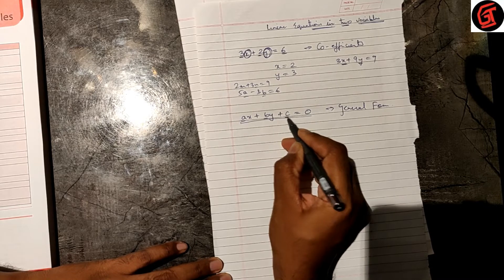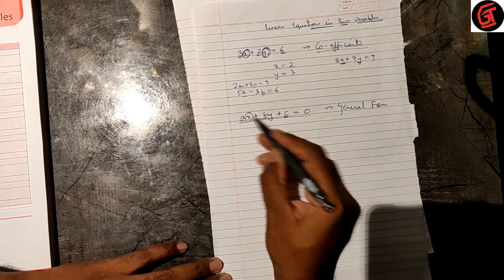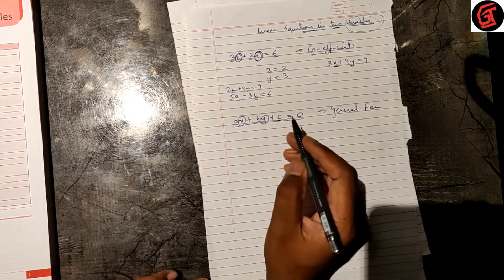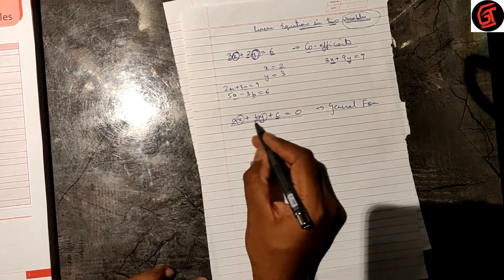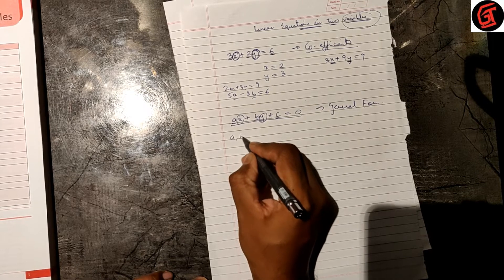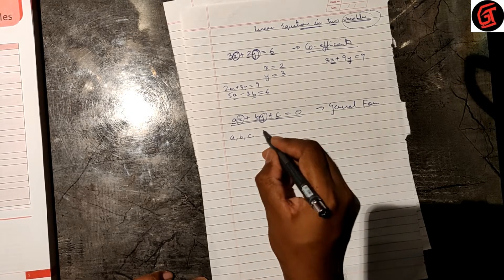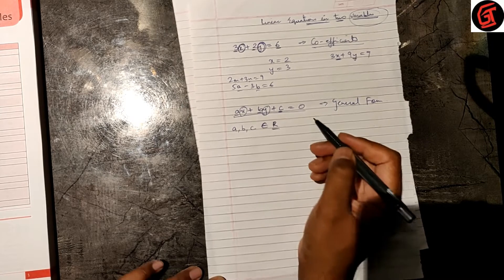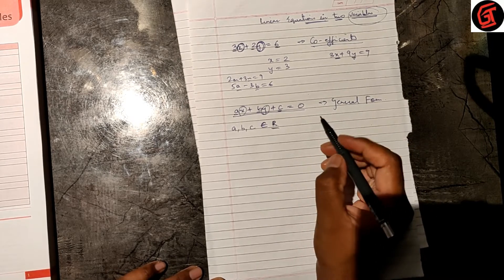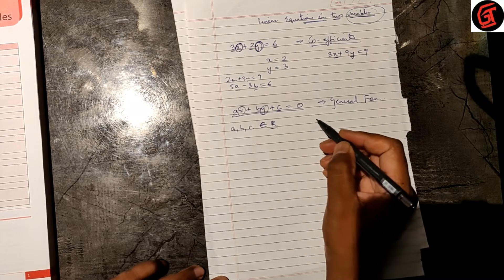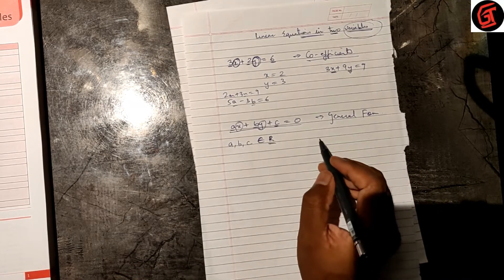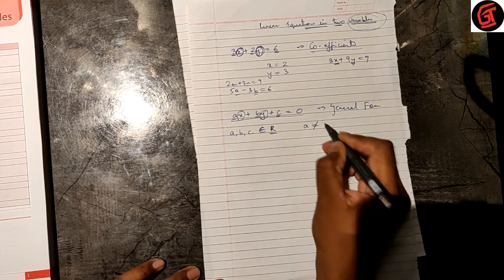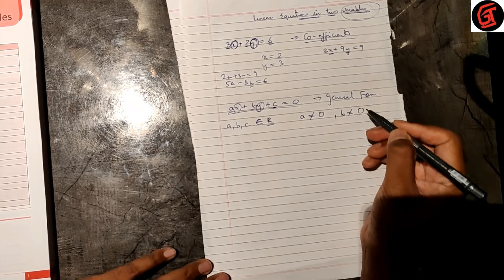Here a, b, and c are called coefficients and x and y are called variables. Now a, b, c are coefficients, but they have to be rational numbers — meaning they belong to the set of rational numbers. Rational numbers include all numbers: negative, positive, and numbers with decimals.